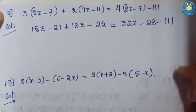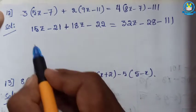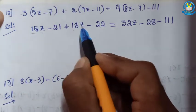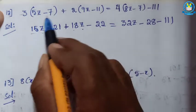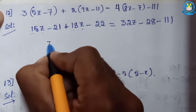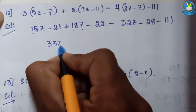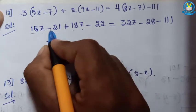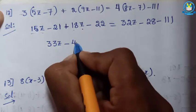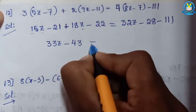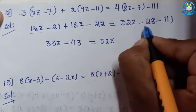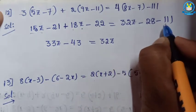Now I will simplify this equation. Here it is the z variable, and it is also a z variable. First of all I will add all the z variables: 15z plus 18z gives 33z, minus 21 minus 22 gives minus 43, equal to 32z minus 28 minus 1.